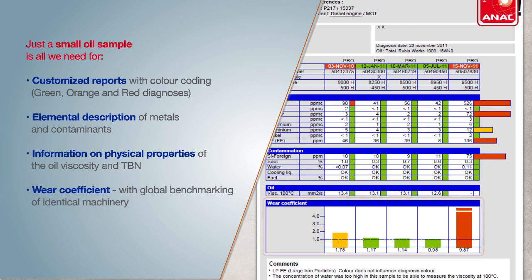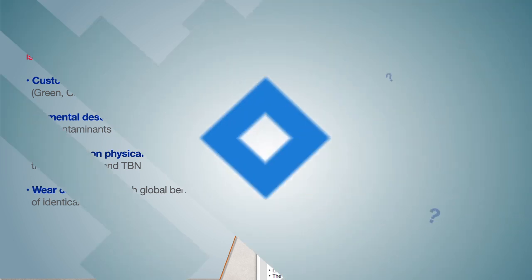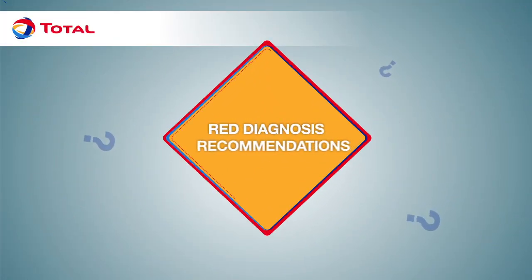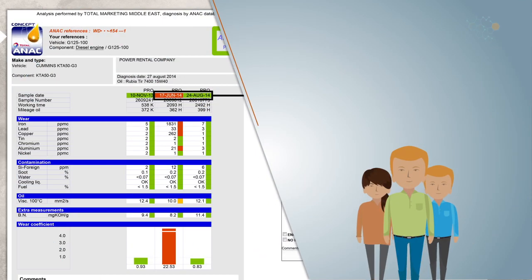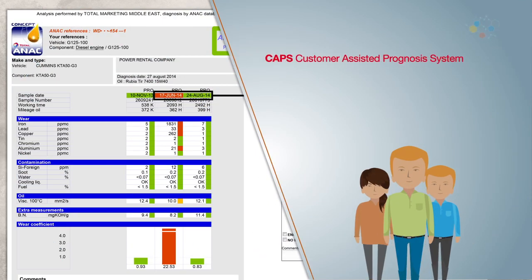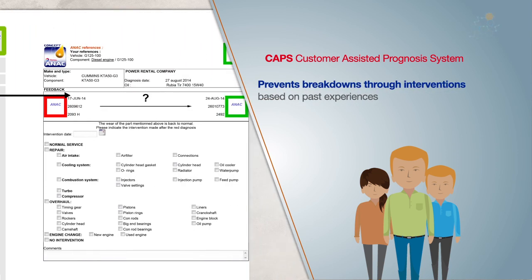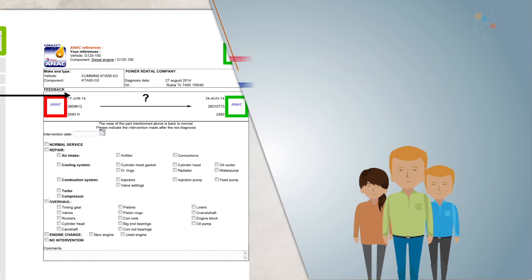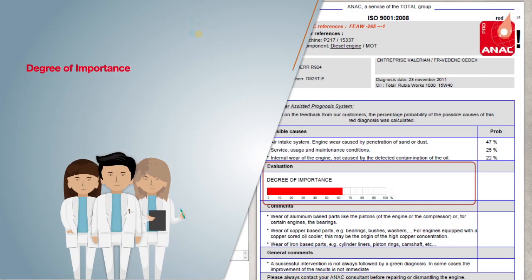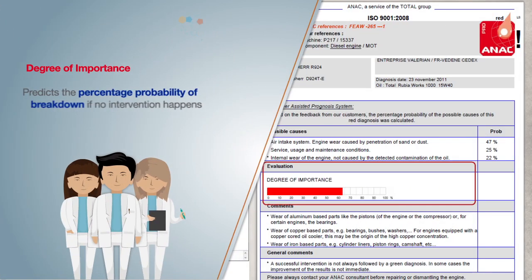Red diagnosis recommendations. CAPS, Customer Assisted Prognosis System, prevents breakdowns indicating possible interventions based on previous experiences on similar equipment. Degree of importance predicts the percentage probability of breakdown if no intervention happens.